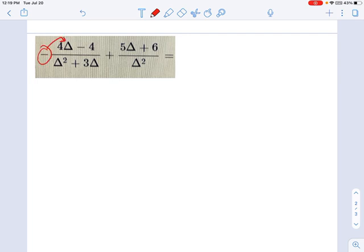I'm also going to take that negative sign and distribute it into the fraction because I think it's a little obnoxious the way it's written right now. So I have negative 4 delta plus 4 on top, and let's factor it now.